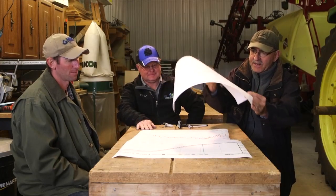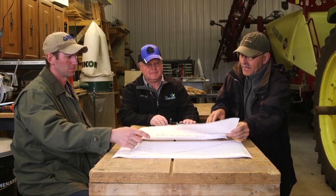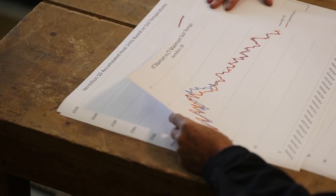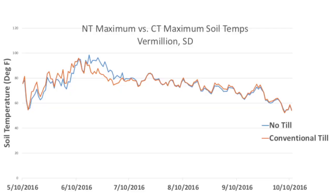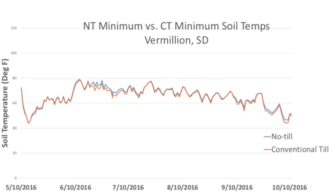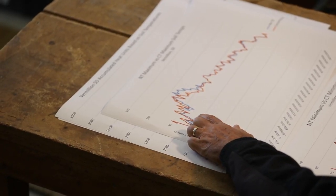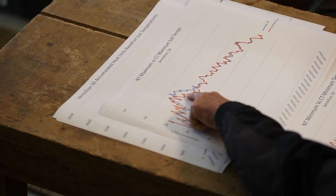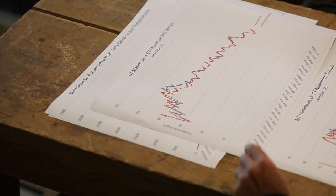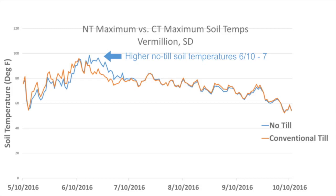If we have a look not at accumulated heat units but actual temperatures, we've got maximum and minimum temperatures. These are the maximum for the no-till versus conventional, and then the minimum temperatures. We had lower maxima here, but the maxima actually went higher in the middle part of June for the no-till soils — what was happening there?